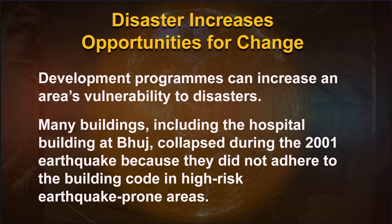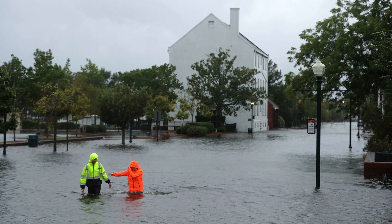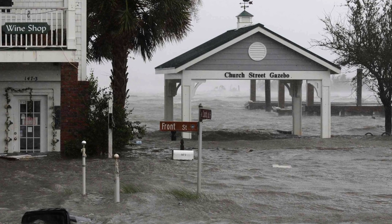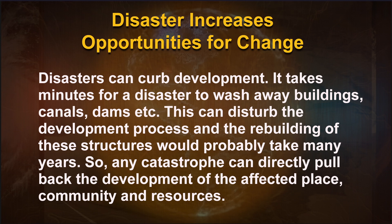Many buildings, including the hospital building at Bhuj, collapsed during the 2001 earthquake because they did not adhere to building codes in high-risk earthquake-prone areas. Development programs can also be designed to decrease susceptibility to disasters — for example, housing projects built under codes designed to withstand high winds and flooding result in less destruction during the next tropical storm or flood. Disasters can curb development: it takes only minutes for a disaster to wash away buildings, canals and dams, disturbing the development process, with rebuilding taking many years.